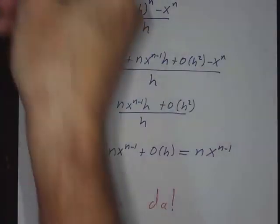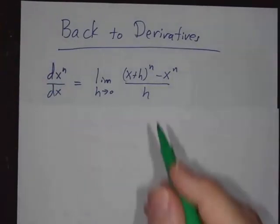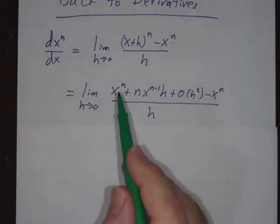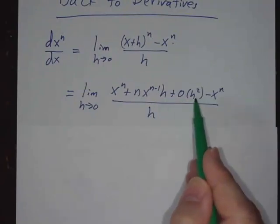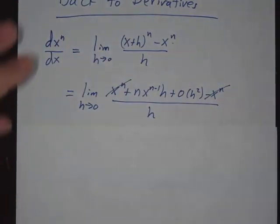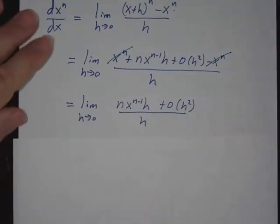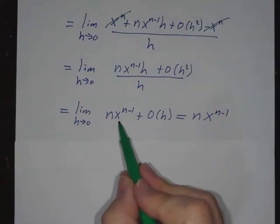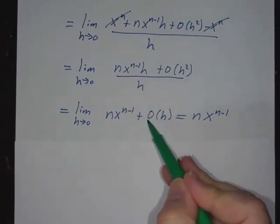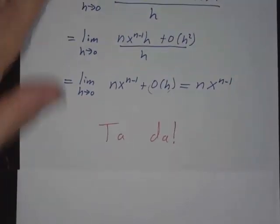So now that we know that it works for all of these things, we can go back to computing our derivatives. The derivative of x to the n, x plus h to the n minus x to the n over h, take a limit. x to the n plus nx to the n minus 1 h plus order h squared, minus x to the n. The x to the n's cancel. nx to the n minus 1 h plus order h squared divided by h. That gives you nx to the n minus 1 plus order h. These terms had 2 powers of h, you divide by h, now you've got 1 power of h. 1 power of h, that goes to 0 as h goes to 0. And you're left with nx to the n minus 1. And we're done.